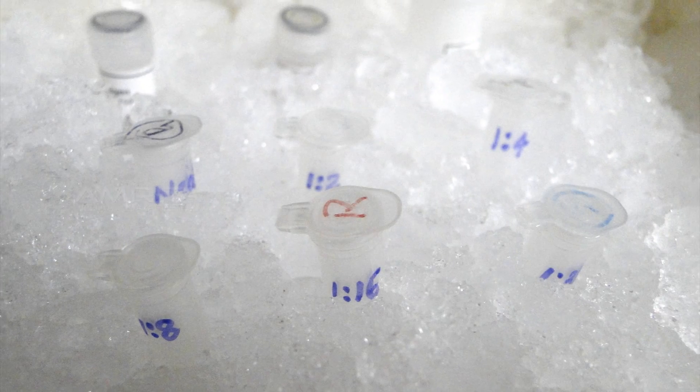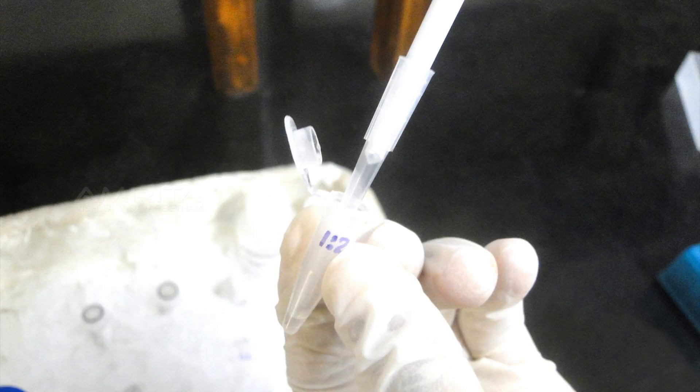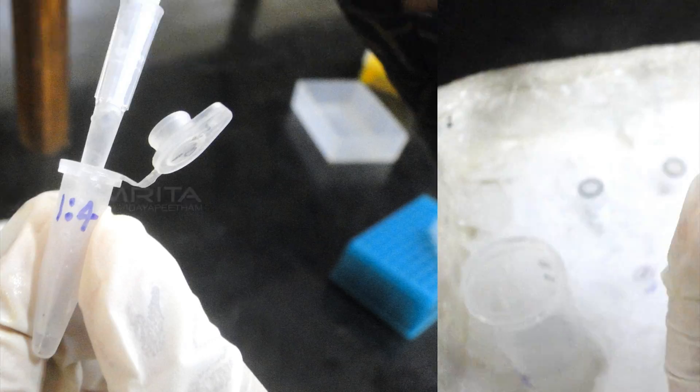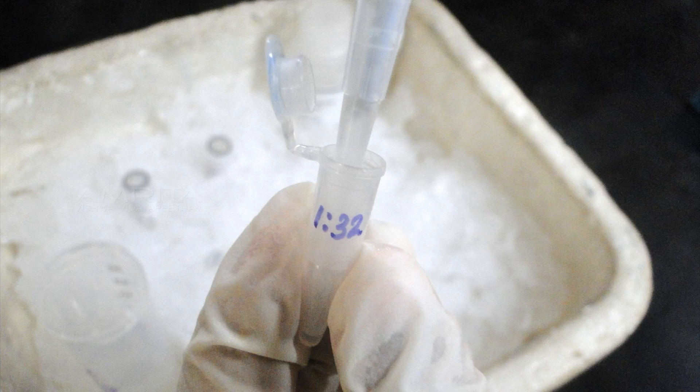Take 6 vials and label them as NEAT, 1:2, 1:4, 1:8, 1:16, and 1:32.